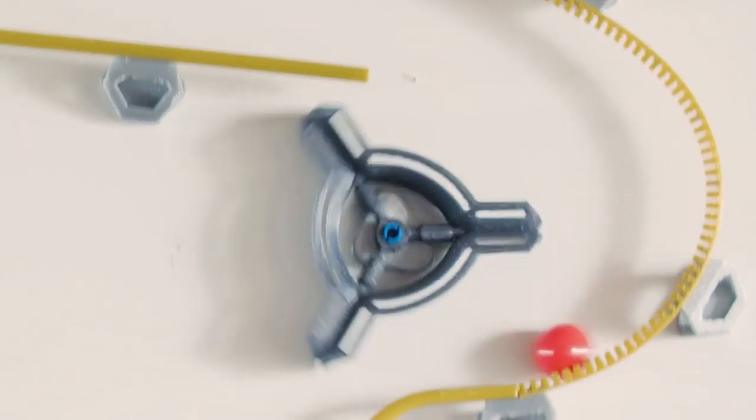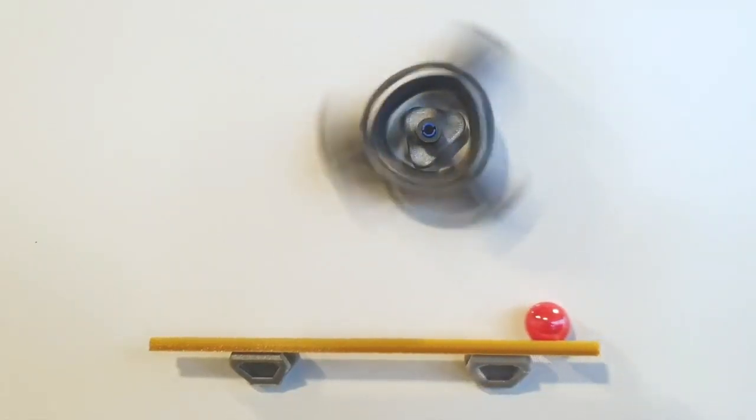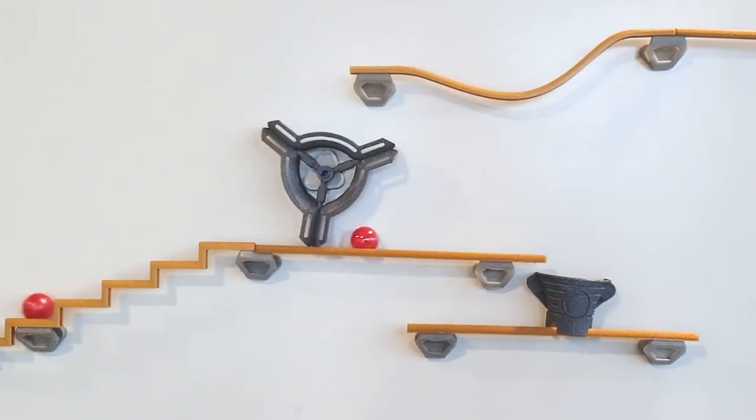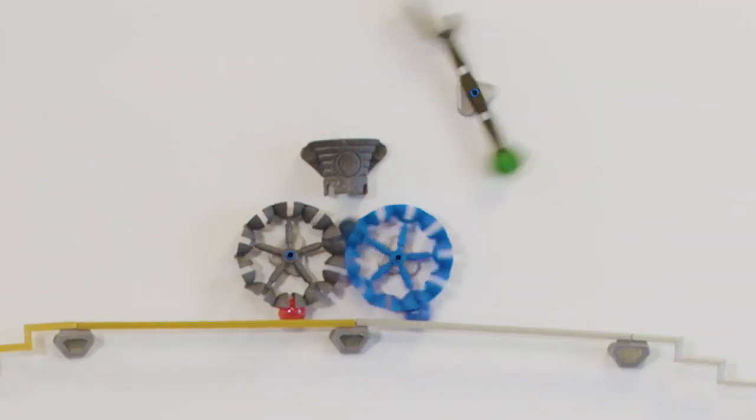Take the spinner for example. With one ball, it spins. That's fun. But put another one and you'll get a path creator. Put three balls and you got a show.